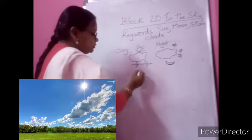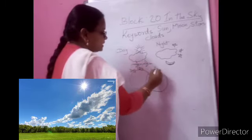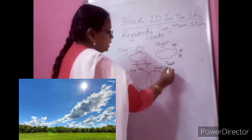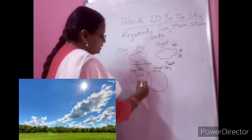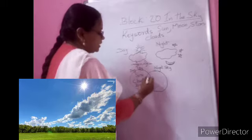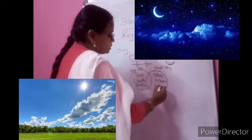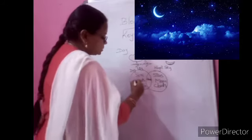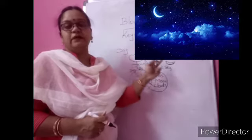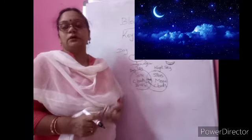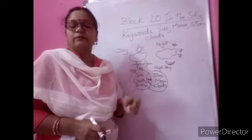Now, night sky and day sky. When I start writing — what do you see in the day sky? What do you see in the night sky? You can see the picture in your textbook, page number 124. In the day sky you can write: sun, clouds, birds. In the night sky: stars shining, moon, and clouds. Both times we can see clouds. So clouds appear in both day and night sky. The keywords for this class are sun, moon, stars, and clouds.